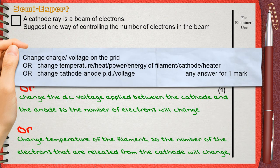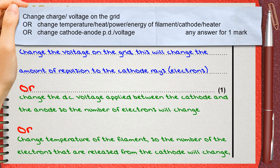The mark scheme gives the mark of the question for change charge or voltage on the grid. This is one possible answer. Or change temperature, heat, power, energy of filament or cathode or heater. This is another possible answer. A third possible answer is change cathode anode potential difference or cathode anode voltage. Only one of these answers is needed.